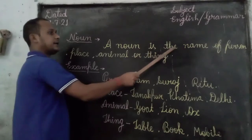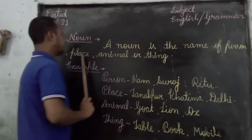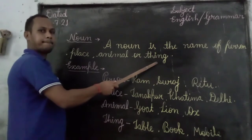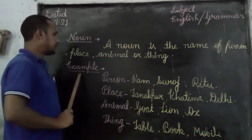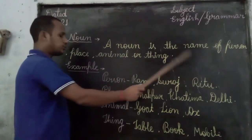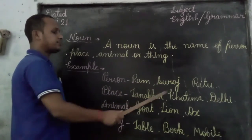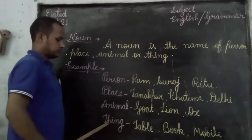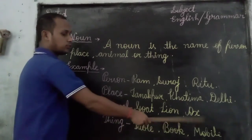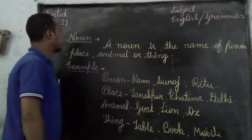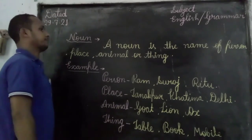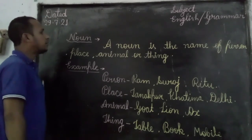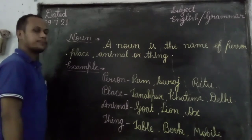Again, a noun is the name of person, place, animal or thing. Now see examples. Person: Ram, Sura, Sritu. Places: Danakur, Khatima, Delhi. Animal: goat, lion, ox. Things: table, book, mobile. So today you have to learn the definition of noun with examples. Write down in your notebook. Thank you.